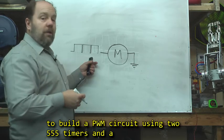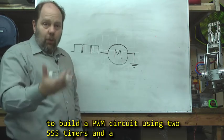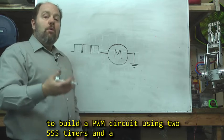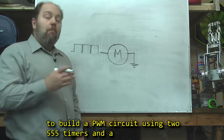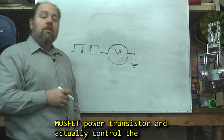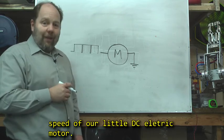So we're going to build a pulse width modulated circuit, or PWM for short, using two 555 timers and a MOSFET power transistor and actually control the speed of our little DC electric motor.